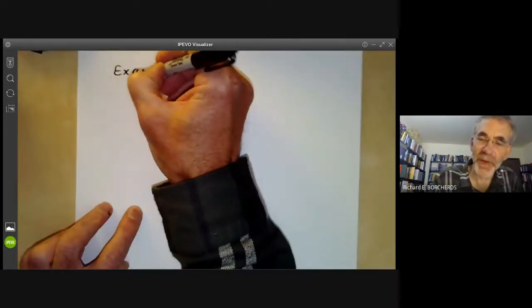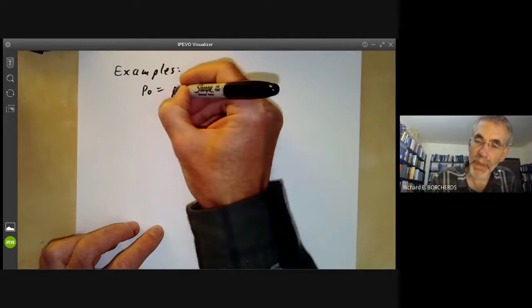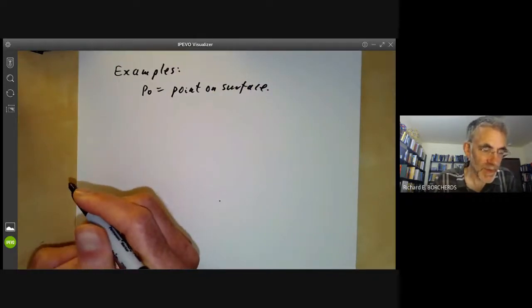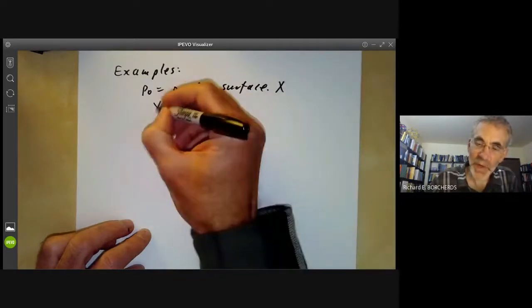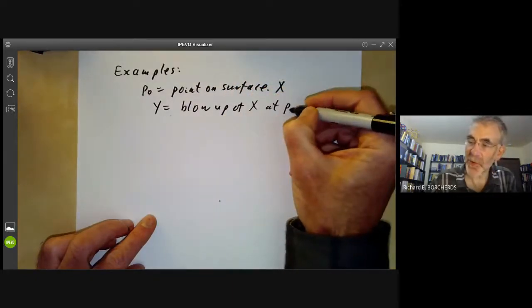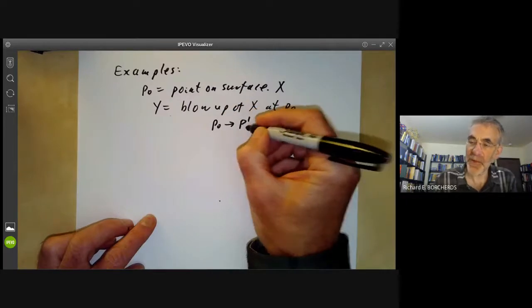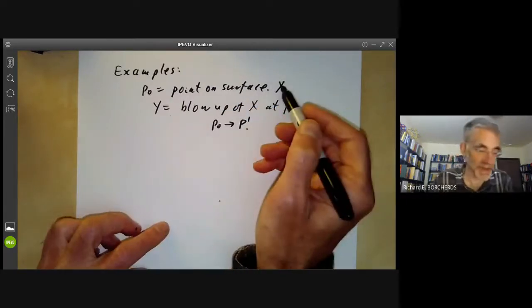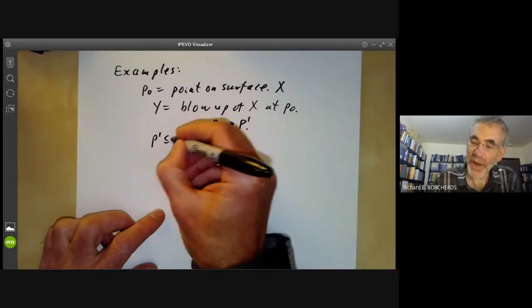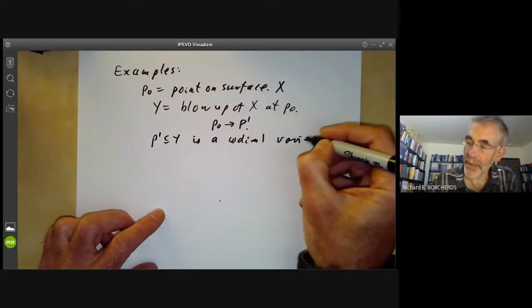So what use are these in algebraic geometry? Well, here are some examples of where they turn up. First of all, suppose that we take P_0 to be a point on a surface. And let's call this surface X. And let's take Y to be the blow up of X at the point P_0. So Y is obtained by replacing P_0 by a copy of the projective line P1. Let's assume X is a non-singular surface. And we can look at this P1 contained in Y. It's a codimension one variety.